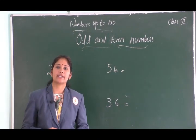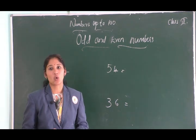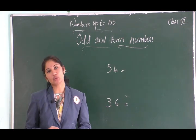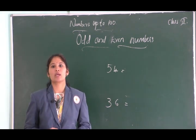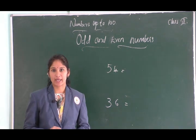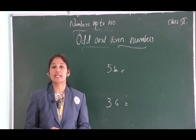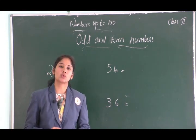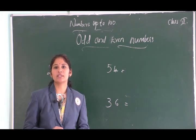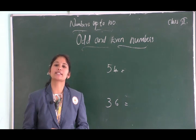An even number is a number that can be divided into two equal groups. An odd number is a number that cannot be divided into two equal groups. We can identify whether a number is odd or even by checking the last digit. If the last digit is 0, 2, 4, 6, or 8, the number is even. Otherwise, it is an odd number.